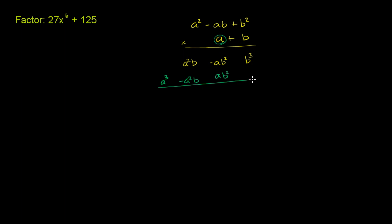And then we just have to add up all of the terms. We have a positive a squared b and a negative a squared b. So these guys cancel out. We have a negative ab squared and a positive ab squared. These guys cancel out.